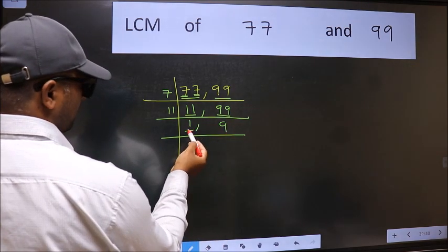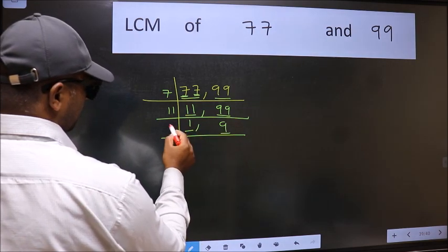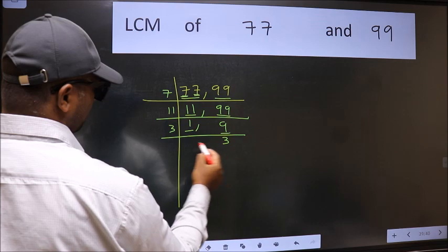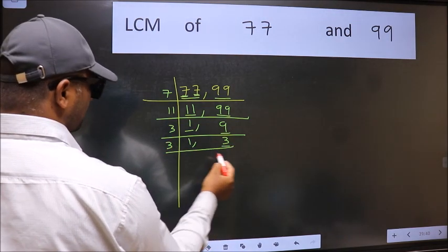Now we got 1 here. So focus on the next number 9. 9 is 3 times 3 is 9. Now here we have 3. 3 is a prime number. So 3 times 1 is 3.